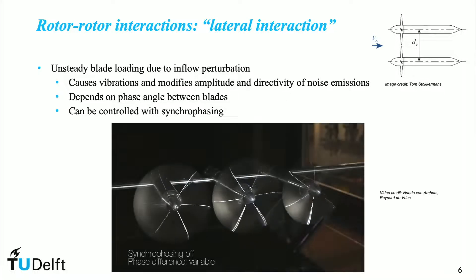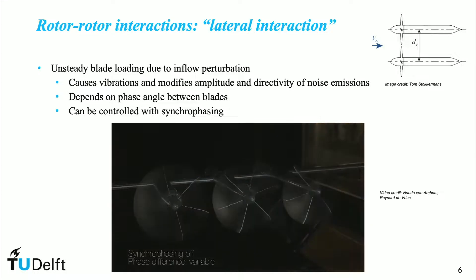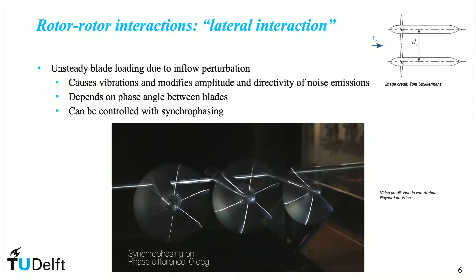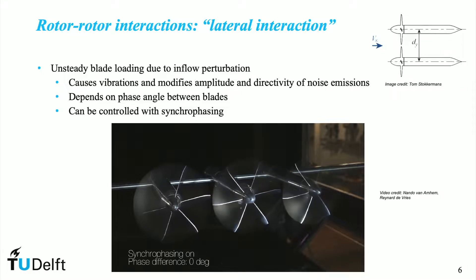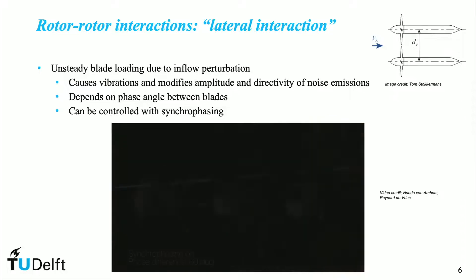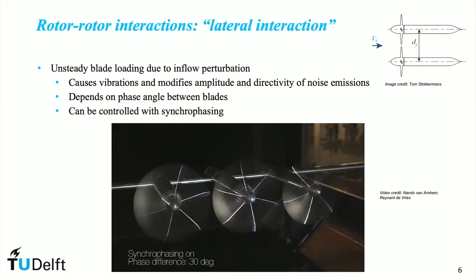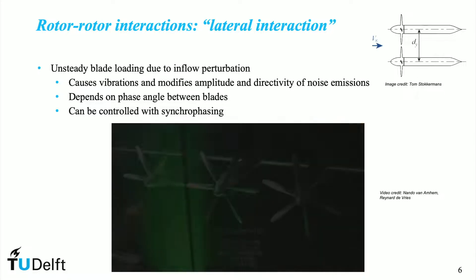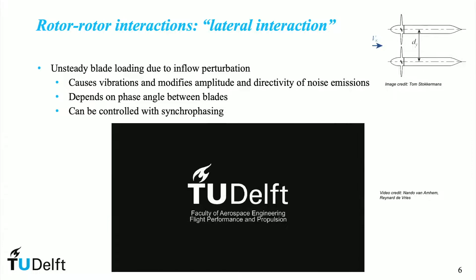In this video, we see three adjacent rotors at constant rotational speed illuminated with a stroboscope. Without synchrophasing, the relative phase of the blades is random. With synchrophasing enabled, the relative phase of the blades is controlled. In the first example, the blades always meet in the horizontal plane. In the second example, the relative phase offset is modified to adjust the aerodynamic and aeroacoustic performance of the rotor. The synchrophasing technique can be an effective control strategy to manage adverse unsteady effects of lateral rotor-rotor interactions.